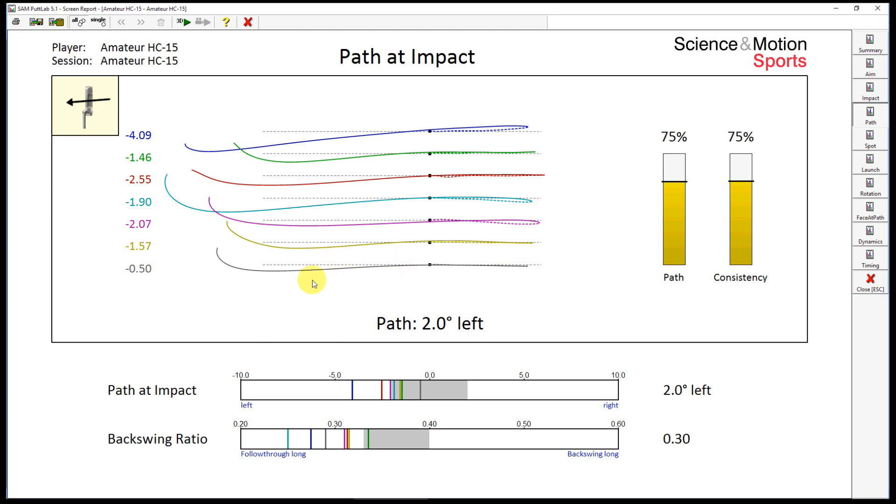The path direction does not necessarily match the overall orientation of the swing plane because of the path arc. The path direction will be more to the right if you hit the ball early and will be more to the left if you hit the ball late in the stroke.